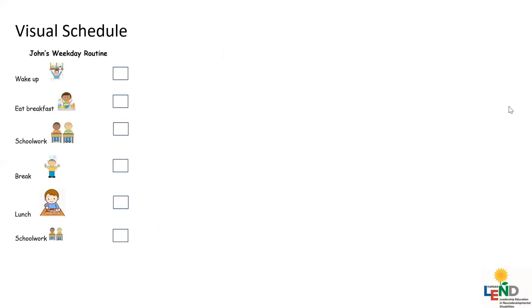One type of visual support is a visual schedule. Visual schedules provide children with an outline of what their day is going to look like by including each activity with a picture. The use of a visual schedule increases the predictability of the day and allows children to feel a sense of control.